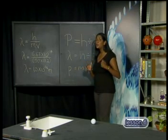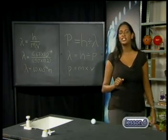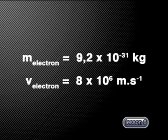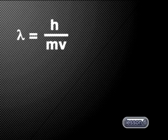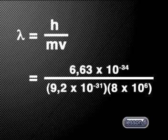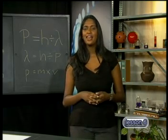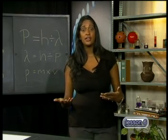This is an incredibly small value and if indeed the cyclist has a wave nature, it would be too small to measure. But if we have an electron of mass 9.2 times 10 to the minus 31 kg moving at 8 times 10 to the 6 meters per second, could we detect its wave nature? Once again we use de Broglie's equation, substituting in the values for the electron. The wavelength equals 6.63 times 10 to the minus 34 divided by 9.2 times 10 to the minus 31 multiplied by 8 times 10 to the 6, giving us a wavelength of 9.0 times 10 to the minus 11 meters. This wavelength is much larger than that of the cyclist — in fact, it is similar to the wavelength of x-rays, and so is large enough for us to detect its wave nature.